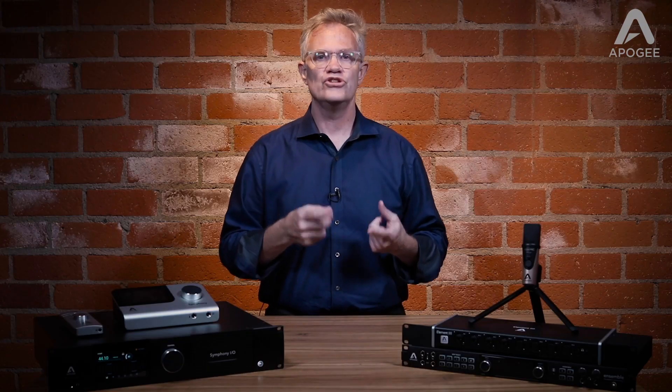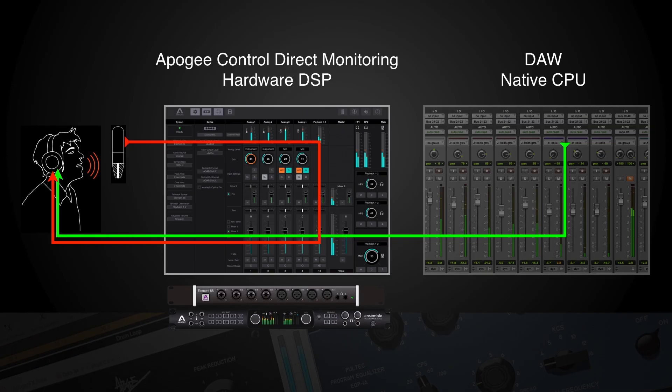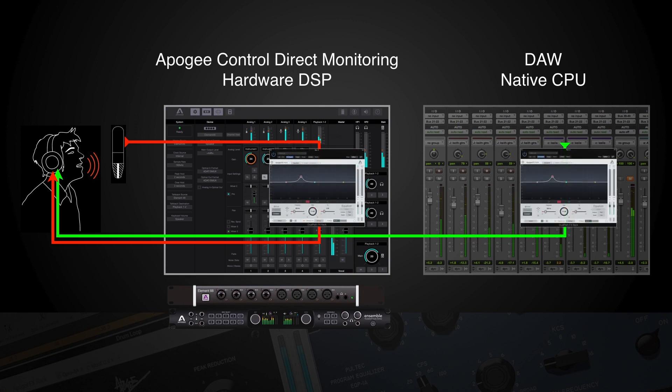Bouncing between two mixers, making plug-in adjustments in two windows, and so on. So how does dual path monitoring simplify this? Two unique features of the Apigee FX rack are a key part of the solution. First, the Apigee FX rack can run in both the direct monitoring mixer and the DAW mixer. Second, the channel link feature allows FX racks in each mixer to be linked, so controls between the two racks are automatically and transparently mirrored. Whatever I adjust in one rack is magically adjusted in the linked rack.